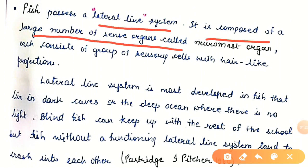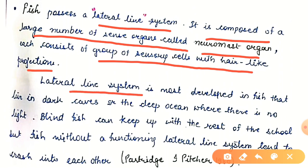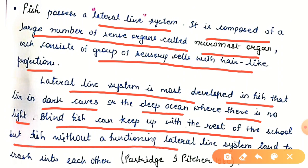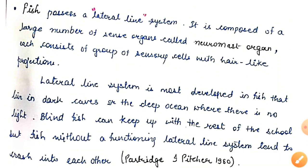The lateral line system is most developed in fish that live in dark caves or deep ocean. Blind fish can keep up with the rest of the school, but fish with improper functioning of the lateral line system tend to crash into each other. So if there is a blind fish it is not very difficult for it to survive, but a fish with a damaged or non-functioning lateral line system is more likely to collide with others and cannot survive — Partridge and Pitcher, 1980.